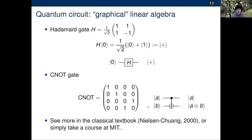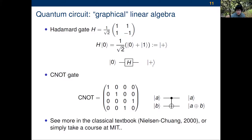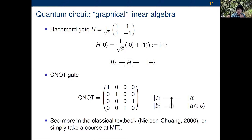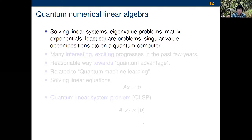There are more complicated things like the Hadamard gate. This matrix applied to |0⟩ gives (1/√2)(1,1), called the plus state — so H transforms |0⟩ to |+⟩. There's also the CNOT gate, which is a quantum-controlled NOT. You can find many more in the classical textbook by Nielsen and Professor Isaac Chuang at MIT. Quantum linear algebra means solving linear systems, eigenvalue problems, matrix exponentials, least squares problems, singular value decomposition, and so on — on the quantum computer.